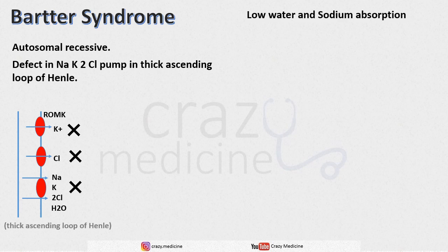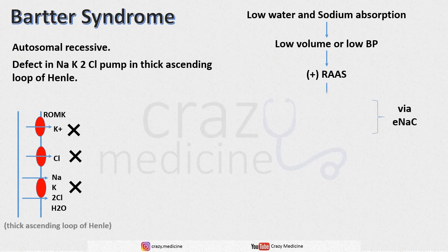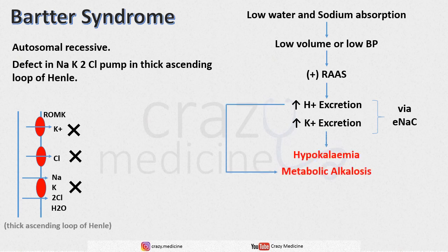Due to low water and sodium absorption, there will be a low volume state or low blood pressure state. This will stimulate the renin-angiotensin-aldosterone system, which will increase aldosterone, which acts on the ENaC channel to increase the excretion of hydrogen ions and potassium ions. In turn, it will cause metabolic alkalosis and hypokalemia.